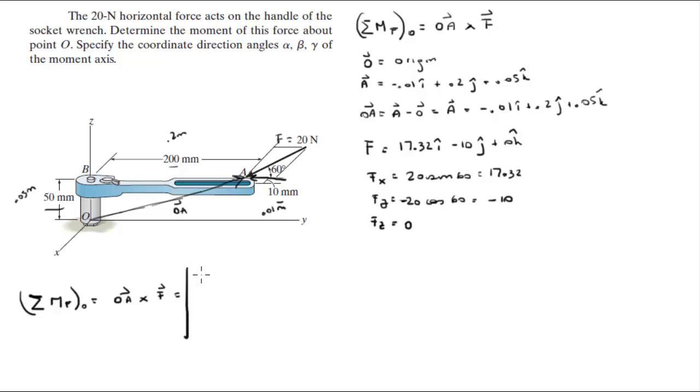OA cross F. So you draw your matrix I, J, K. You put vector OA on the first row which is negative 0.01, 0.2, 0.05. And on the second row you put the force which is 17.32, negative 10 and 0. You rewrite your first and second column, negative 0.01, 0.2, 17.32, negative 10.